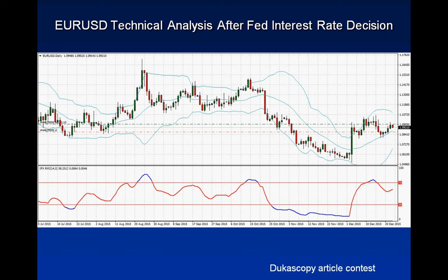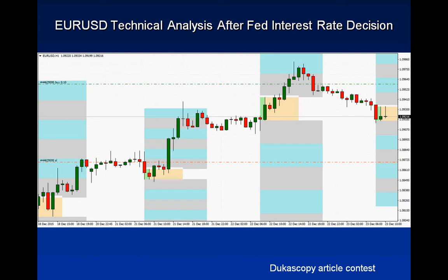EUR/USD technical analysis after the Federal interest rate decision: like we can see, after this interest rate decision EUR/USD is in nowhere land — nothing especially happened. As we can see on the daily chart, price is above the Bollinger Band middle line, so we are still in some kind of a medium-term bullish trend. When we talk about recent prices, EUR/USD for this year is in a strong bearish channel, but right now we are in a small bullish trend. We need to watch and see what will happen. This may be a nice price level for buying, but remember — if price closes below the Bollinger Band middle line, this is not a good sign for buyers.